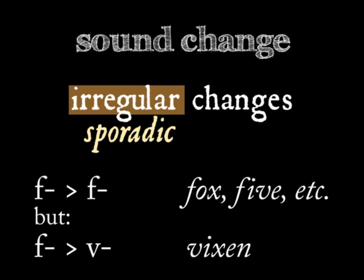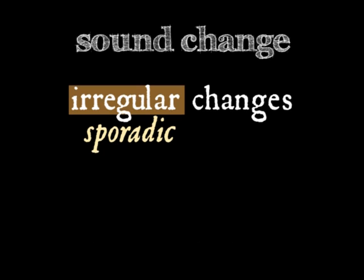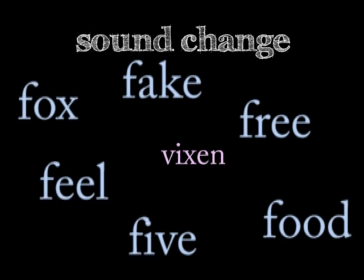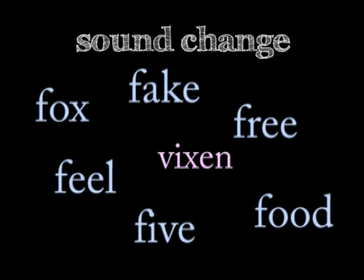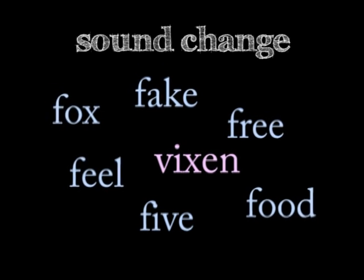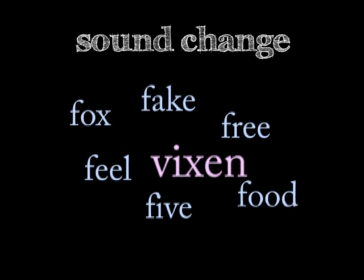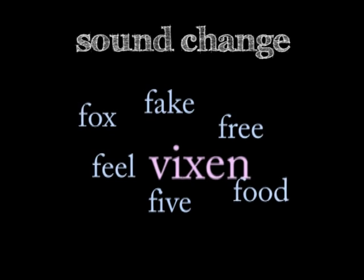The change from Germanic to modern English in 'vixen' is sporadic, since it doesn't match up with any regular, across-the-board sound change in modern English. To understand sporadic sound change, we'd really need to look into the features of local dialects and regional language patterns — at least that's the case in the fox/vixen example, where the two words descend from two different dialects. We aren't going to attempt to uncover the background behind that kind of sound change here.